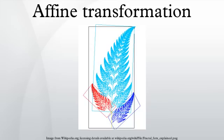To visualize the general affine transformation of the Euclidean plane, take labeled parallelograms ABCD and A'B'C'D'. Whatever the choices of points, there is an affine transformation T of the plane taking A to A' and each vertex similarly. Supposing we exclude the degenerate case where ABCD has zero area, there is a unique such affine transformation T.